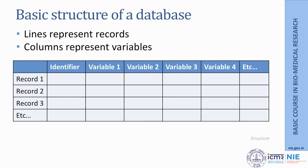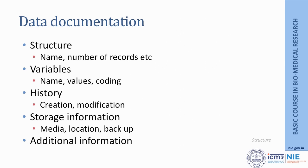What is data structure? For some of you who may be new to the word database, this is an example of a database. Each of these horizontal lines represent records pertaining to one particular individual. Each of these columns represent variables — the information collected on certain variables based on the study question. We need to initially formulate the entire plan of how the data is going to be managed. That can come in the form of what is called data documentation, which can talk about the structure, meaning the name, number of records, and other relevant information.